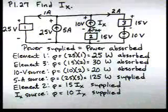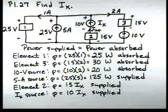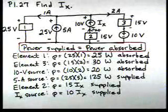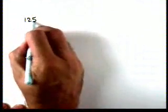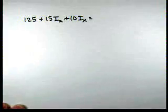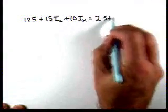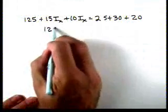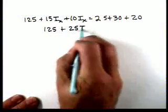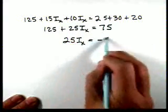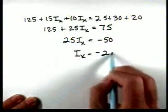Now, based on our principle that power supplied equals power absorbed, let's solve. For the power supplied we have 125 plus 15Ix plus 10Ix, which equals the power absorbed: 25 plus 30 plus 20. Solving this gives 125 plus 25Ix equals 75, so 25Ix equals negative 50, therefore Ix equals negative 2 amps.